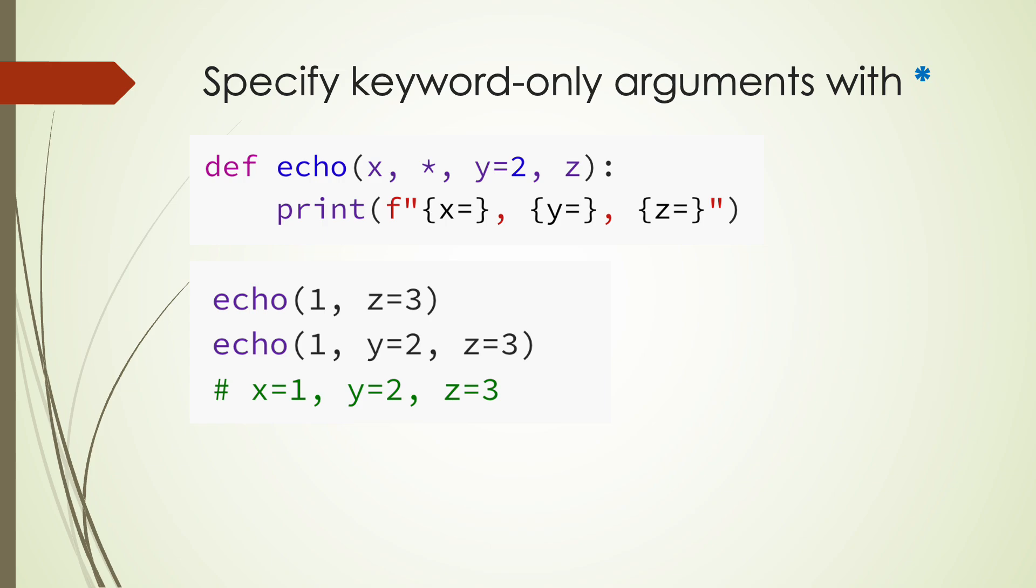For example, we can give a default value to y and still put z after y using the star symbol. This is valid syntax in Python and is commonly used in third-party libraries with complex function arguments. Now both y and z must be passed as keyword arguments and y has a default value.